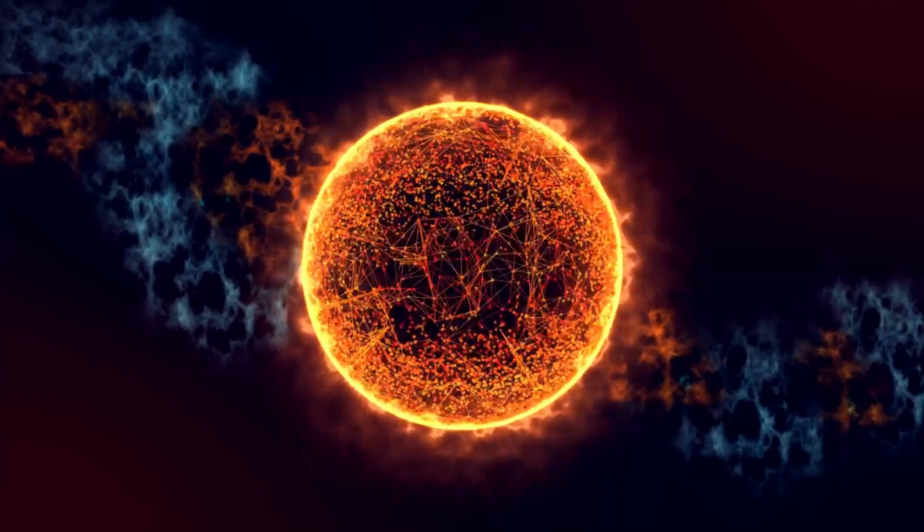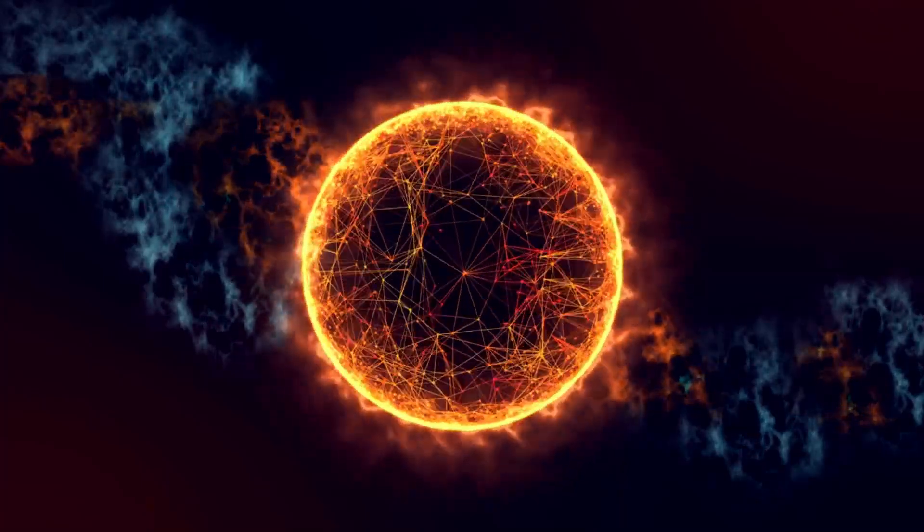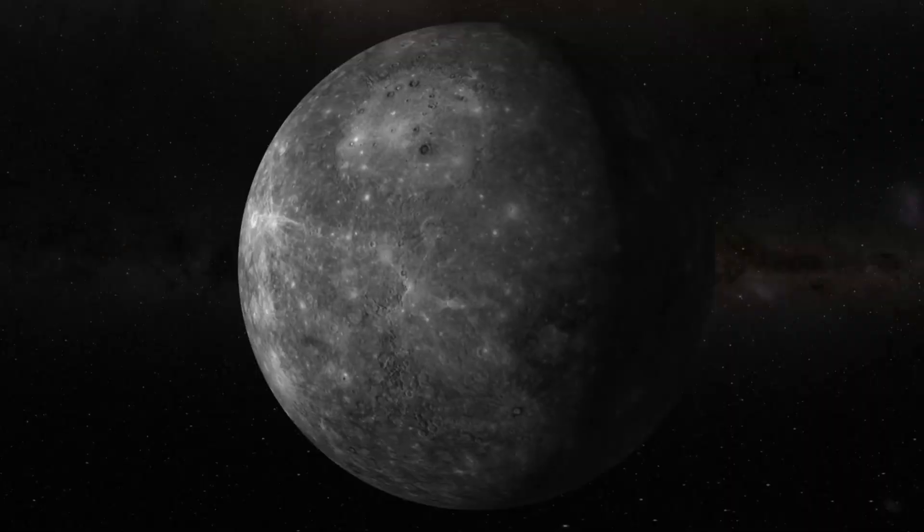Since Betelgeuse is cooler than our Sun, it radiates less energy per unit of surface area, despite the fact that it is more significant and will detonate. Now, we ought to examine what the extraordinary darkening looked like.